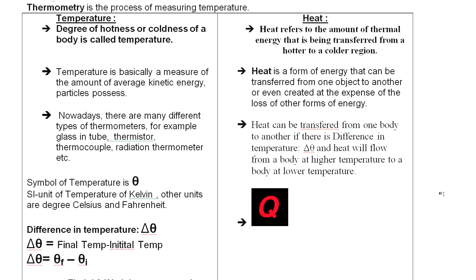To measure temperature, we use different types of thermometers depending on the requirement of the system. To measure the temperature of a human being, we use a clinical thermometer. To measure temperature in a building where fire alarms are fixed, we use a thermistor. To measure the temperature of a volcano, we use a thermocouple. To measure the temperature of the surface of the sun, distant stars, or even for COVID-19 patients, we use a radiation thermometer.